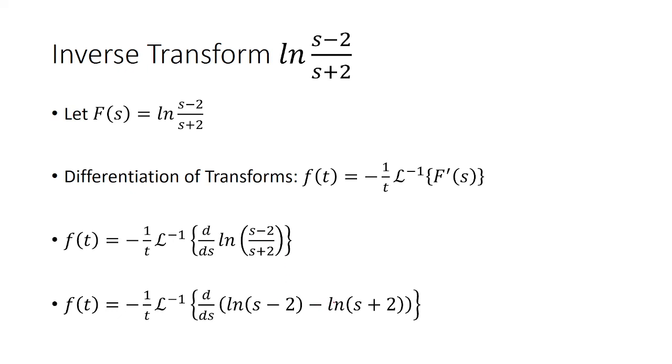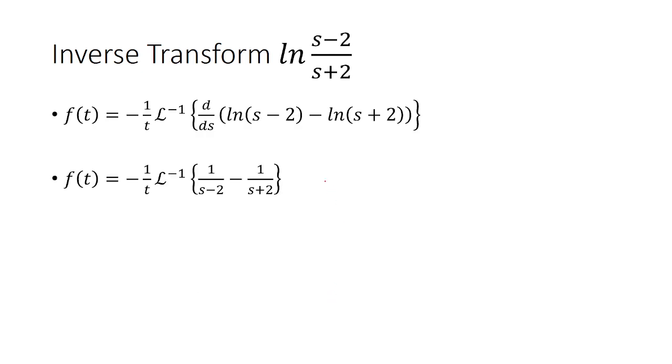So I split this up into two logs, and now I can easily find the derivatives as 1 over s minus 2, and then minus 1 over s plus 2. Find the common denominator, subtract them, we end up with 4 over s squared minus 4.